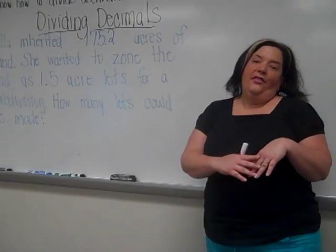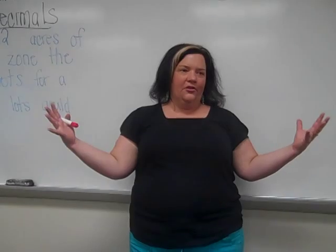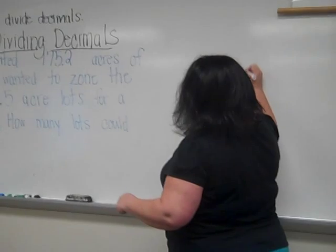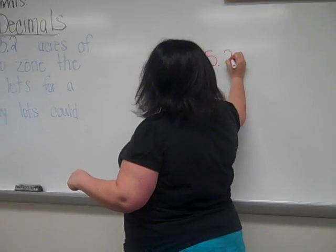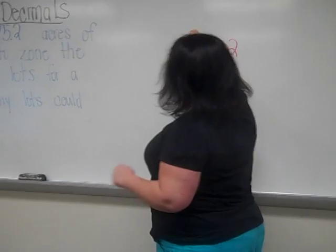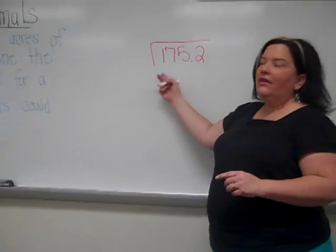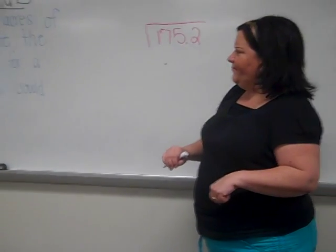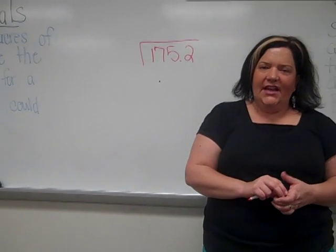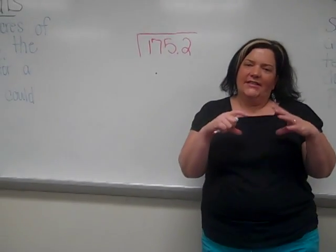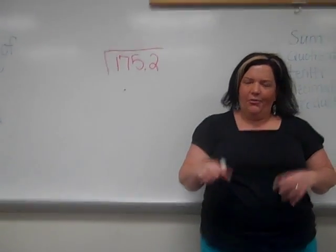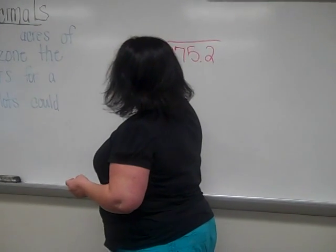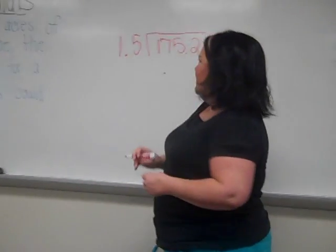So the dividend is the total amount of land she inherited. So that would be 175 and 2 tenths. I'm going to make my division house, or set up my division symbol. And the 1 and 5 tenths acres are the size of each lot. So we're trying to figure out how many lots she could make in her subdivision.